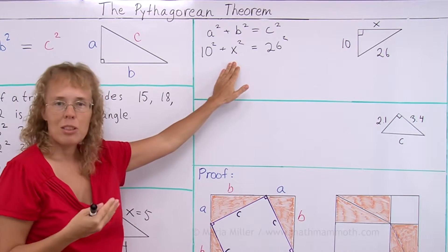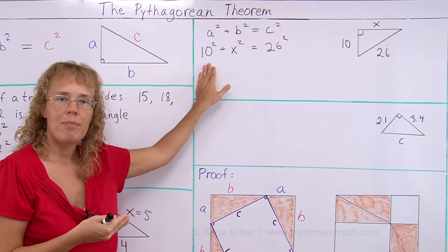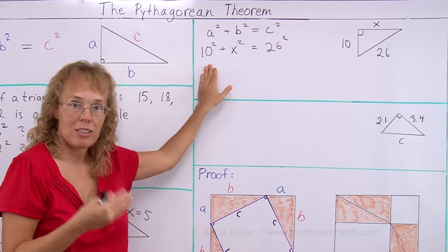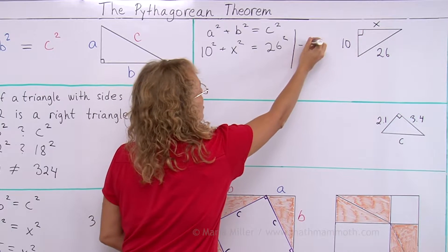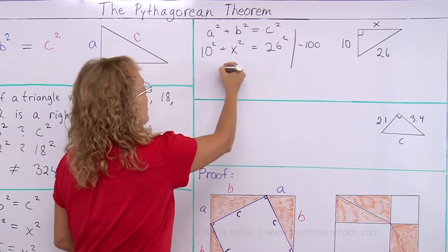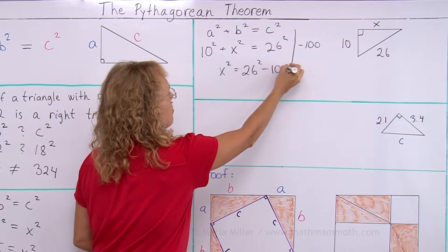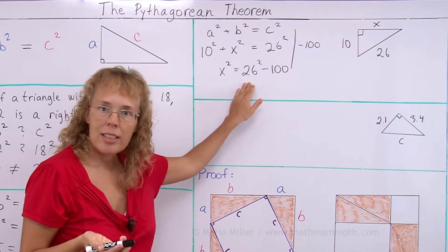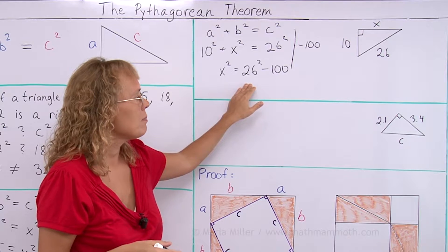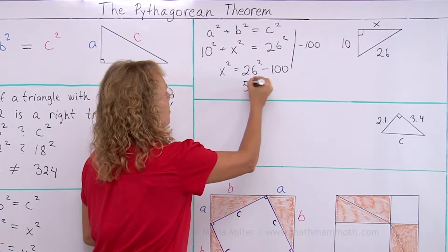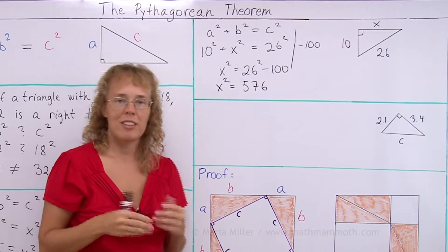I want to isolate x squared on one side. To do that, I subtract 10 squared, which is 100, from both sides. So x squared equals 26 squared minus 100. Calculating with a calculator: 26 squared minus 100 is 576. So x squared equals 576.